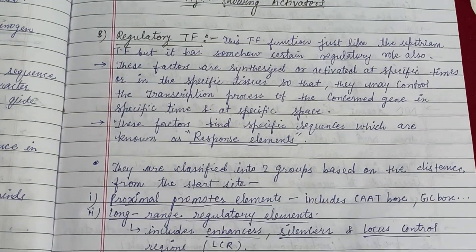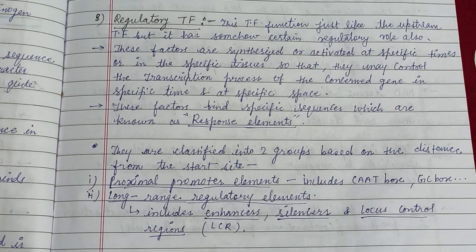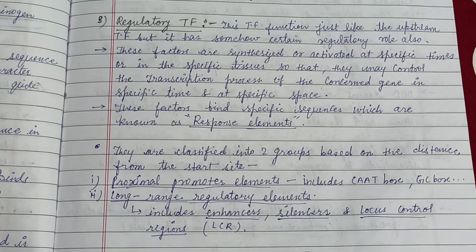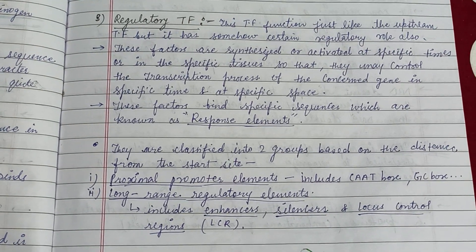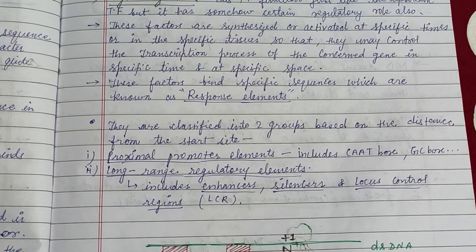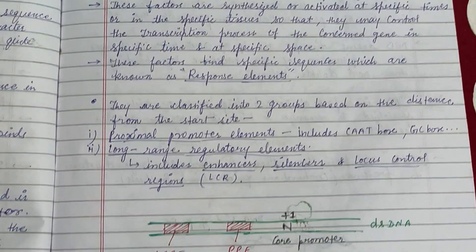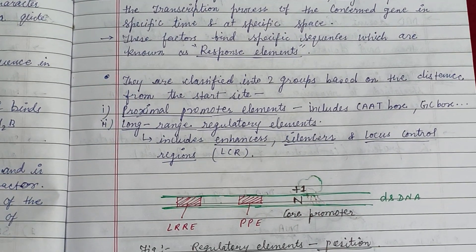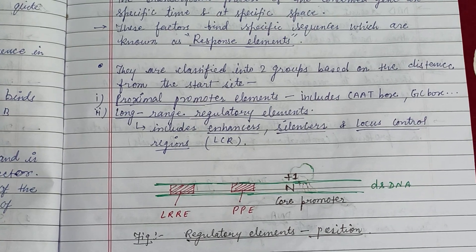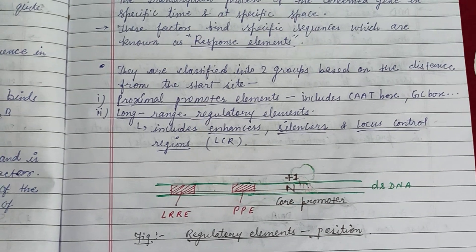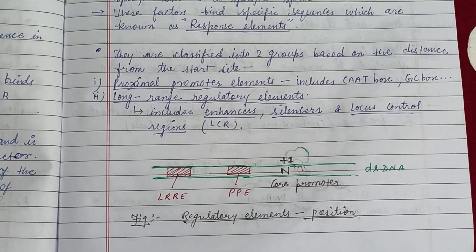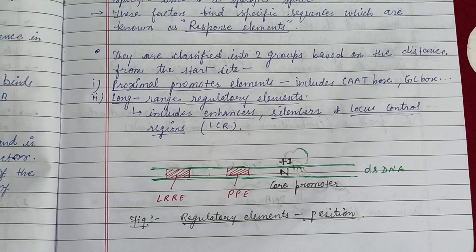The last group is the regulatory transcription factor, which is similar to the upstream transcription factor but also has a certain regulatory role. They are classified into two groups based on the distance from the start site: the proximal promoter element (PPE) or the long-range regulatory element (LRRE).